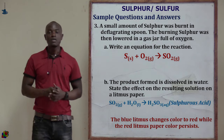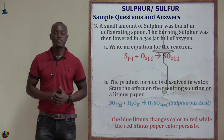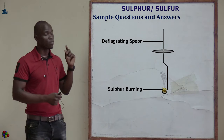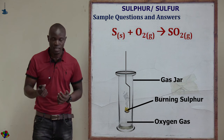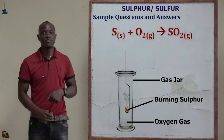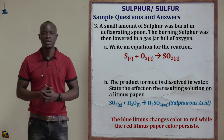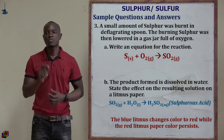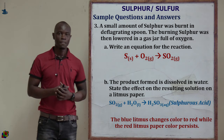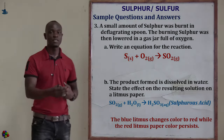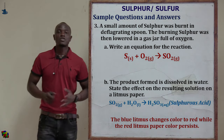Question number three: a small amount of sulfur was burned in a deflagrating spoon, and the burning sulfur was then lowered into a gas jar full of oxygen. The question asks to write an equation for the reaction. Sulfur reacts with excess oxygen to produce sulfur dioxide: S + O₂ → SO₂.